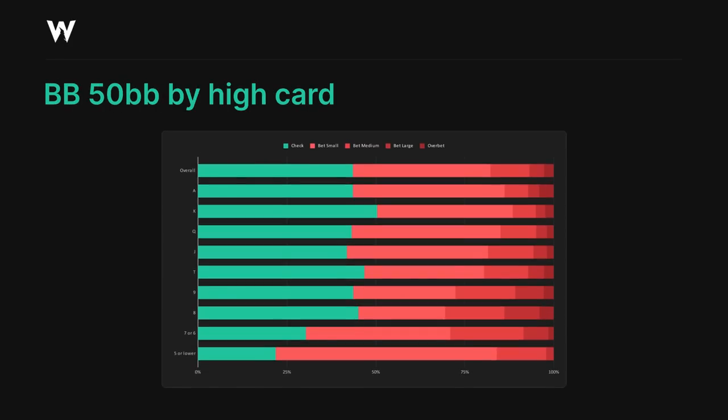Lastly, if we sort by high card, we see a slightly different trend. Our frequency on any board with an eight or higher stays relatively consistent, while the lower card boards are actually the ones which we get to pressure more aggressively. This would be a byproduct of the fact that the small blind very rarely has overpairs in the limp call line at this stack size, while they also don't have very many of the offsuit low card combos which make two pairs or straights. The big blind gets to pressure these boards relatively aggressively, while on any other type of board texture, the small blind will have enough top pairs that they can defend relatively well against a cbet from the big blind.